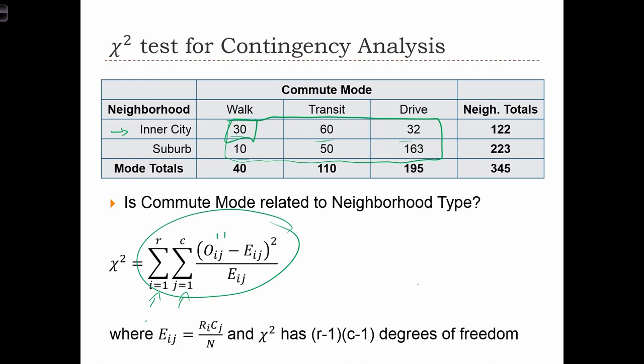So all we are going to do is for each of these cells, we're going to take the square difference between the observed frequency and the expected frequency. And in this case, the expected frequency is this, which is just the row sum times the column sum over n.